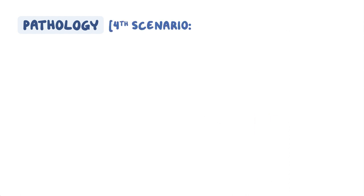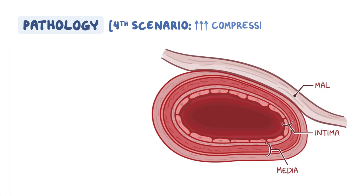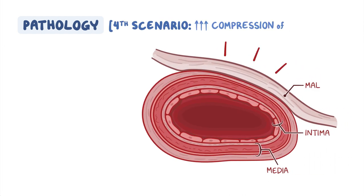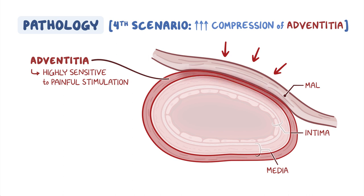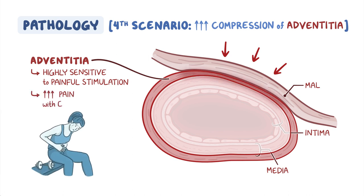The fourth scenario is the excessive compression of the outer layer of the celiac artery wall, the adventitia. The adventitia is highly sensitive to painful stimulation. It's possible that the high degree of compression causes pain, which explains the worsening of pain with exercise in these patients.